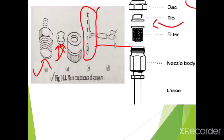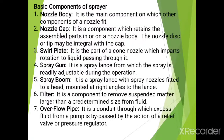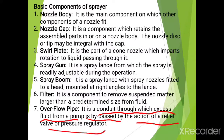The next component is the filter. There is a small filter present in the nozzle body. This filter is used to remove suspended matter larger than a predetermined size from the fluid. The next component is the overflow pipe. It is a conduit through which excess fluid from a pump is bypassed by the action of a relief valve or pressure regulator.